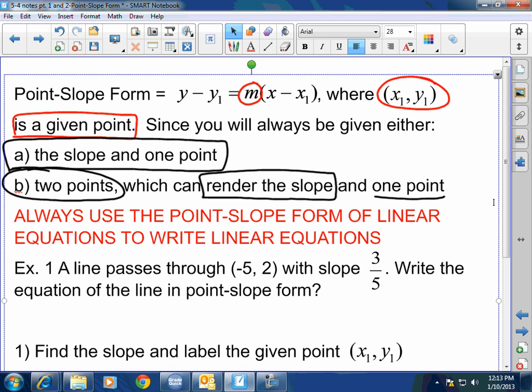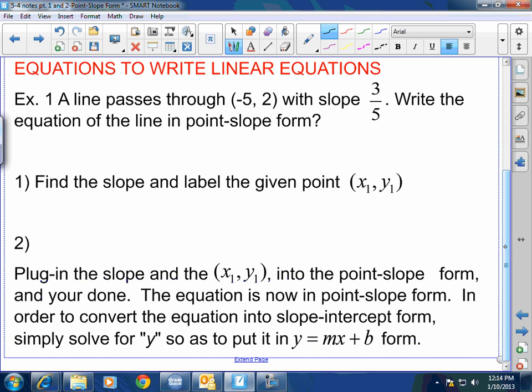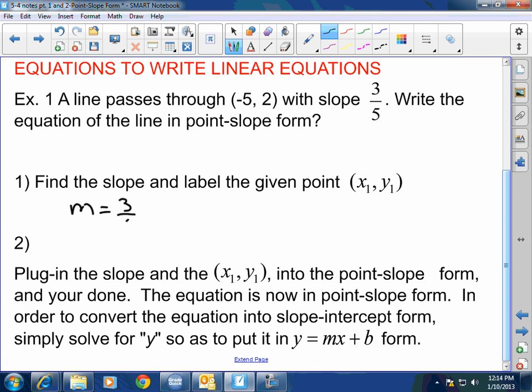A line passes through negative 5, 2 with a slope of 3/5. Write the equation of the line in point-slope form. Step 1: Find the slope and label the given point x₁, y₁. What slope was I given? My m equals 3/5. What am I going to call my x₁, y₁? Negative 5, 2. They gave me what I needed. This is the example where they give you one point and a slope.